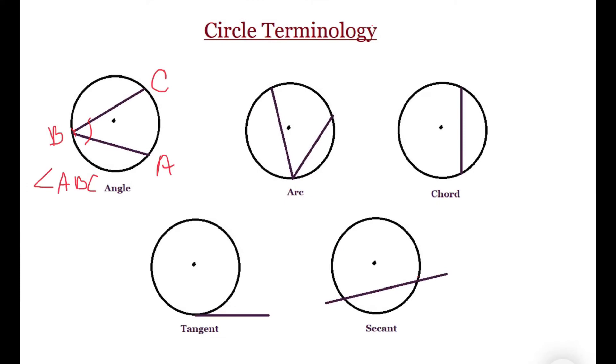The next figure is going to show an arc. The notation for an arc is represented like so. So if I have AC, I'm going to name this ABC. This is the arc AC. And an arc is any portion of the circumference of a circle.